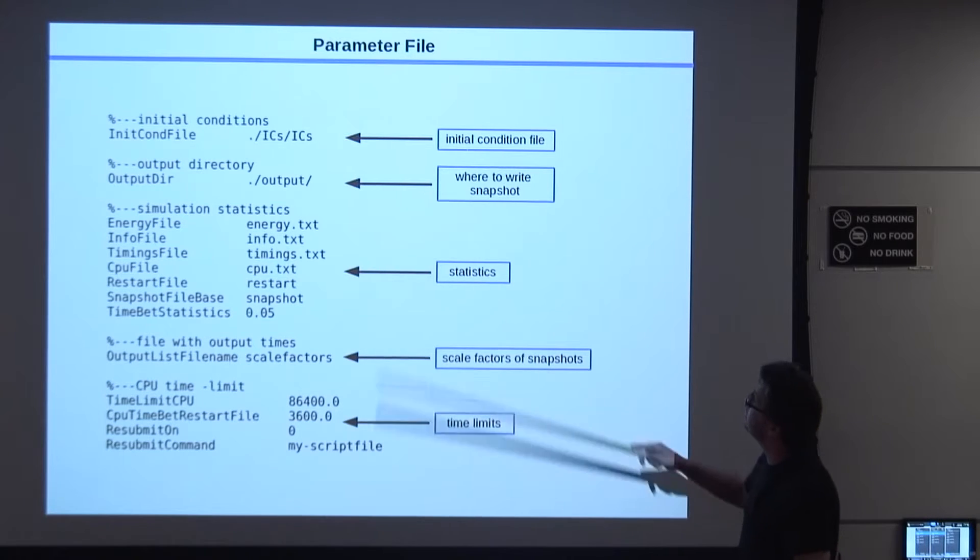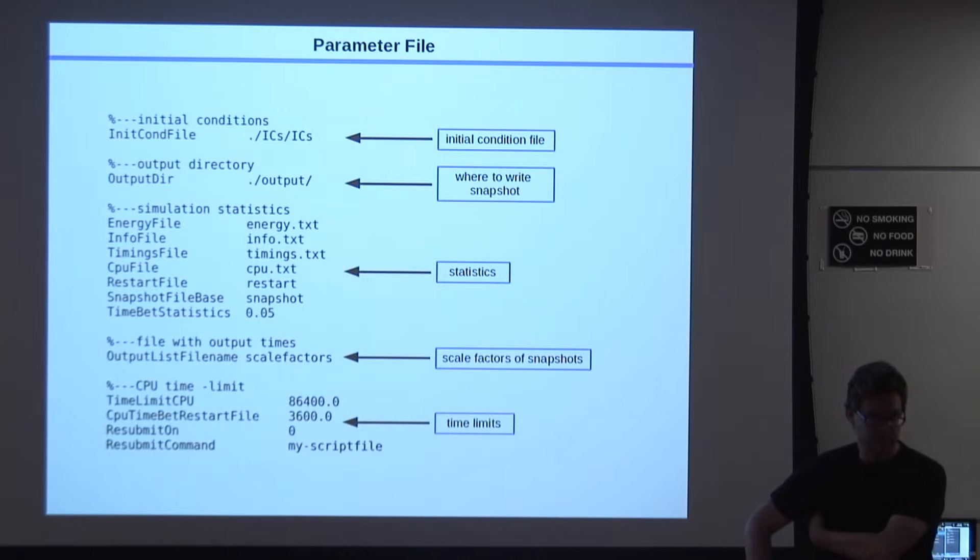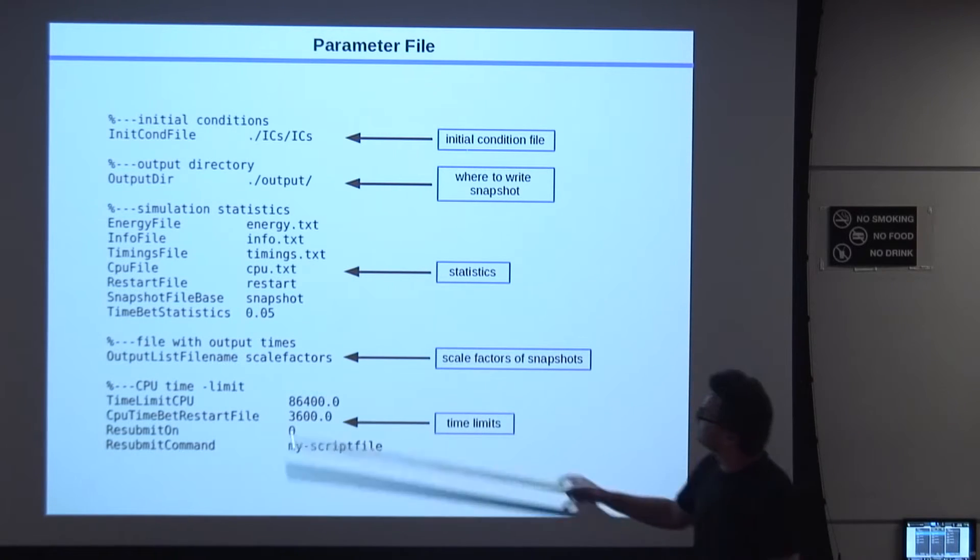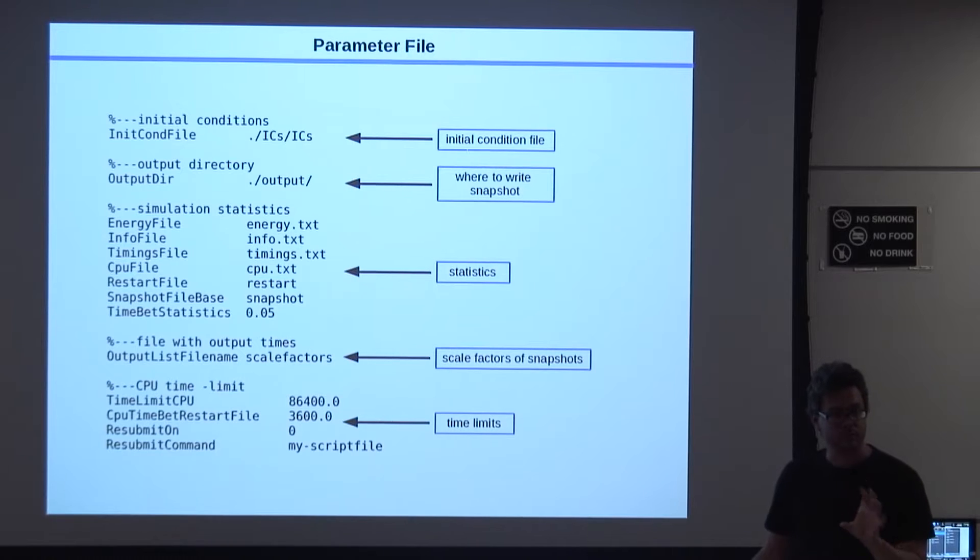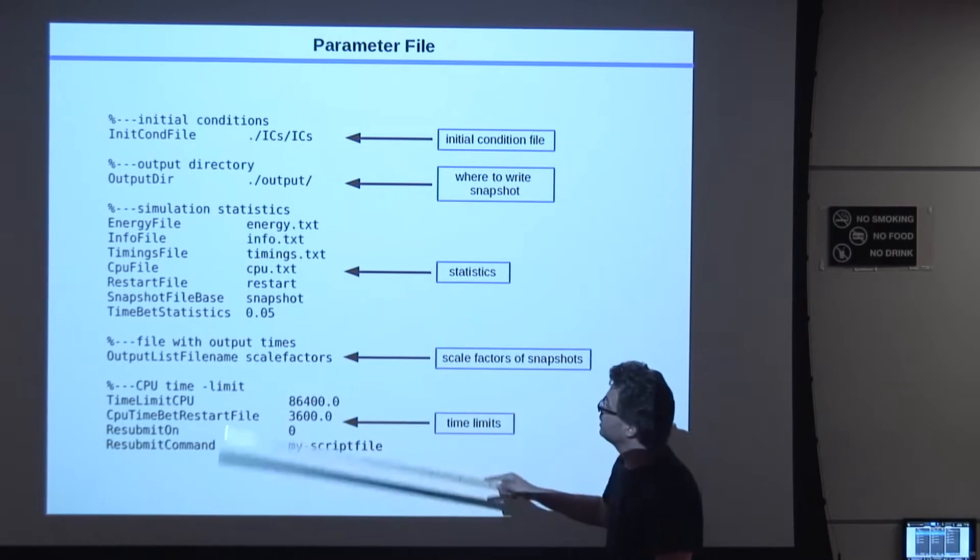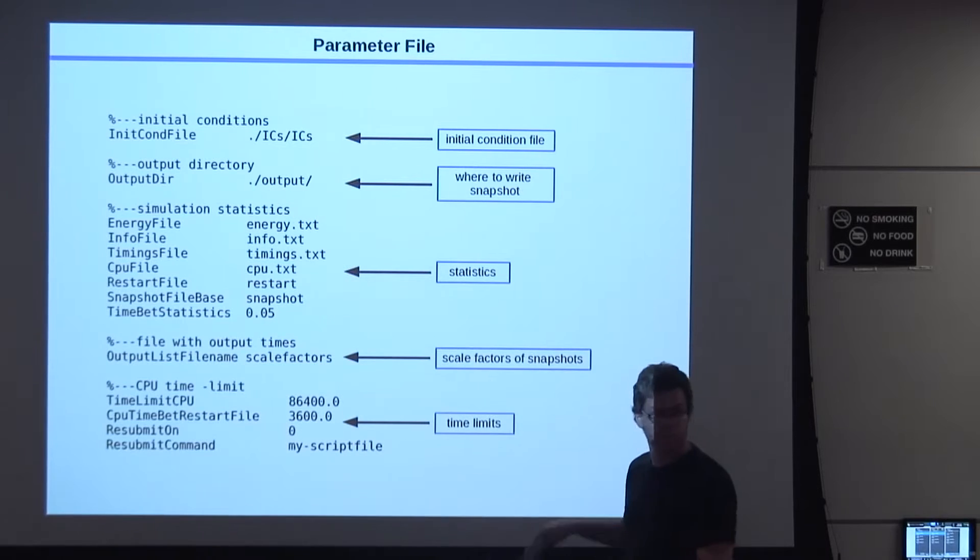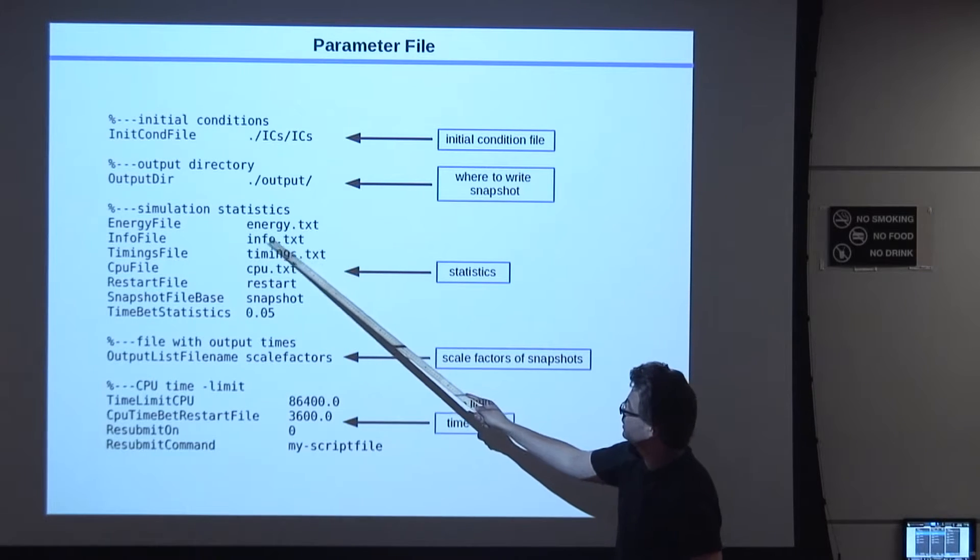Now, one of the central pieces is this parameter file. Beyond the make file, which sets the general features of the code, that sets things like where the initial conditions are. The initial conditions are a binary file of a certain file type. If you just specify where those are, then you tell the code where to write the output, so all these snapshot files.